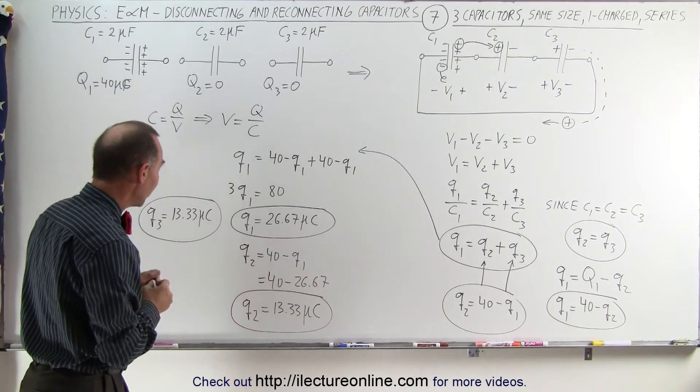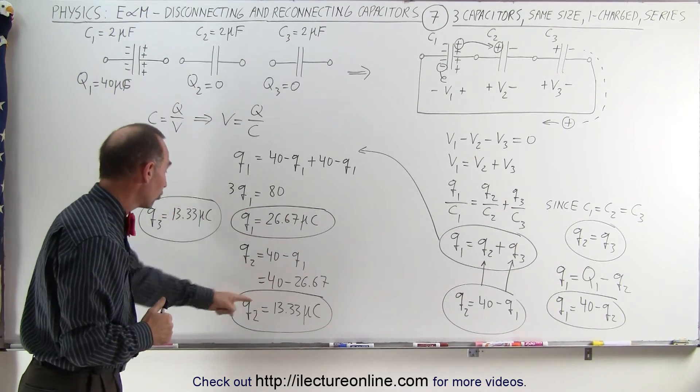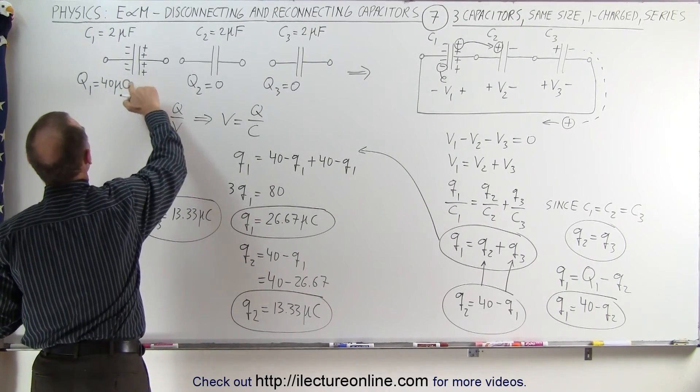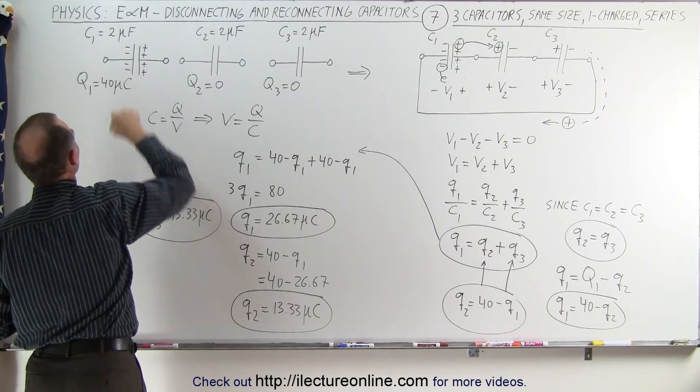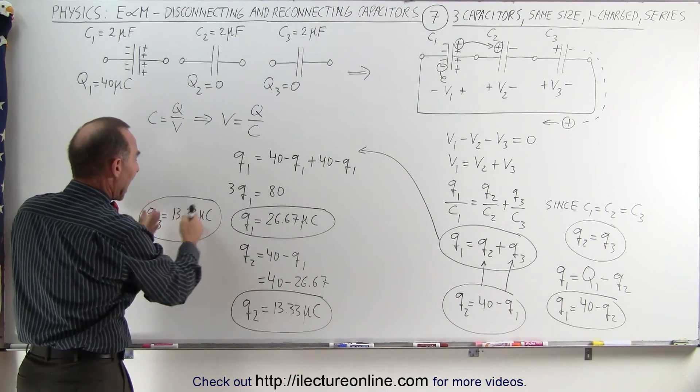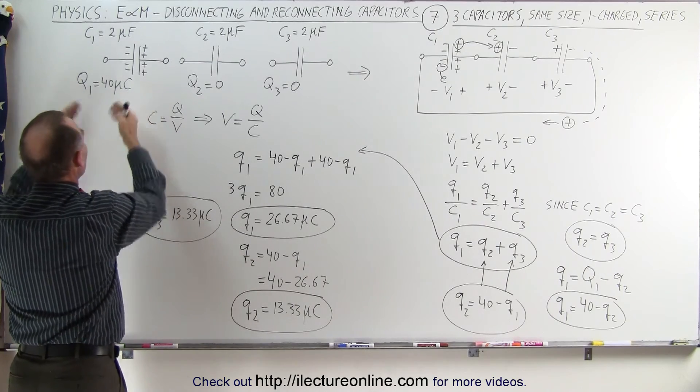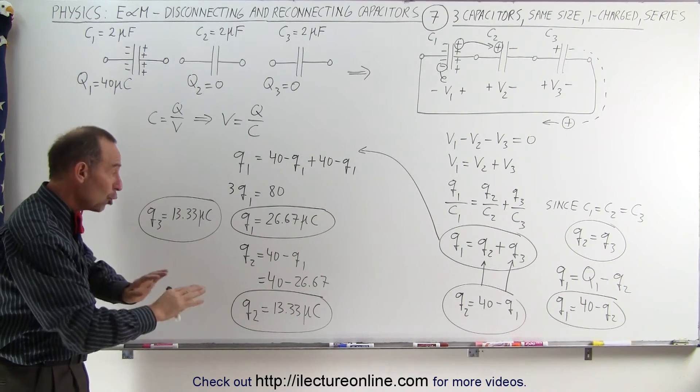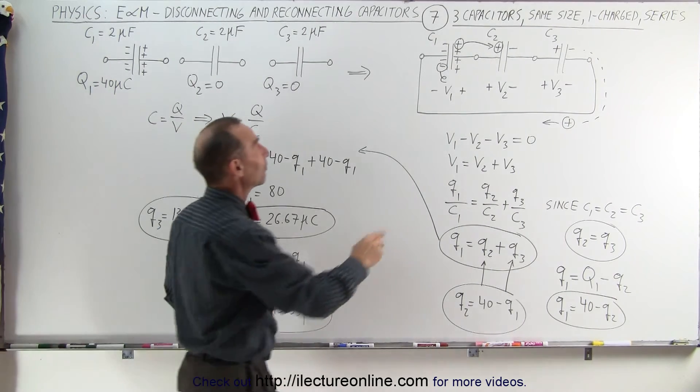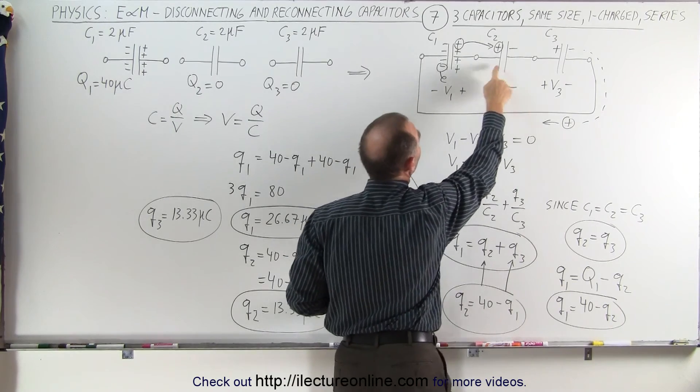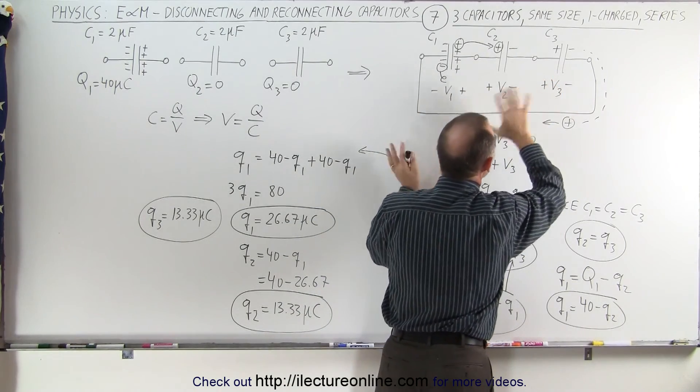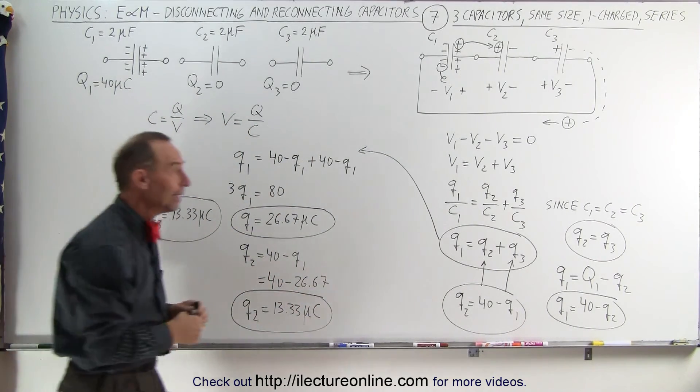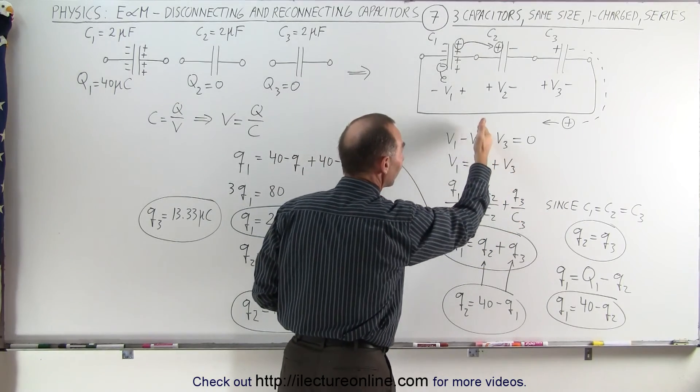And in the end, notice that if I were to add up all these charges together, they do not add up to the 40 microcoulombs. This should be microcoulombs, not microfarads. Good thing I caught that. But as you can see, if you add these three together, they do not add up to the 40 microcoulombs we started with. You might say, did I make a mistake? The answer is no, you did not make a mistake because we have a positive connected to a positive here and a negative to a positive. There's going to be a difference in the way the charges are distributed. To make sure you do it correctly, you definitely want to follow this procedure.